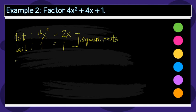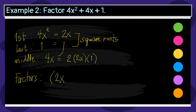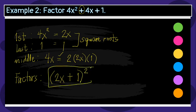For the middle term, we have 4x. We multiply the square root of the first and the last term, then multiply by 2: 2 times 2x times 1 equals 4x, which is the middle term of the given. This is correct — it satisfies the condition of a perfect square trinomial. The factors are 2x plus 1, squared, since the middle term is positive. So the factors of 4x squared plus 4x plus 1 is the quantity of 2x plus 1, squared.